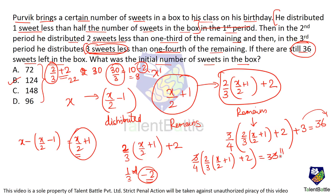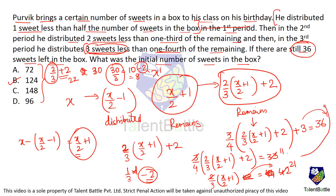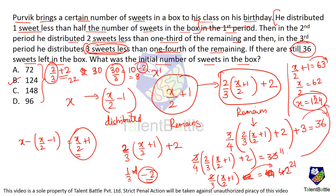Taking 4 to the right: 2/3 × (x+2)/2 + 2 = 44. Subtracting 2: 2/3 × (x+2)/2 = 42. Simplifying: (x+2)/2 × 2/3 = 42, which gives (x+2)/2 = 63. Therefore x/2 + 1 = 63, so x/2 = 62, and x = 124. These are the original sweets bought by Purvik for his birthday.